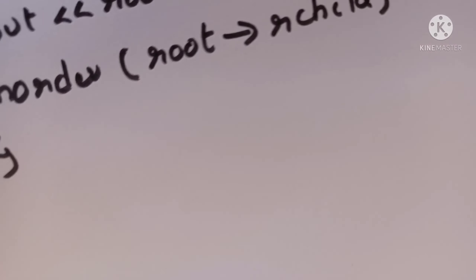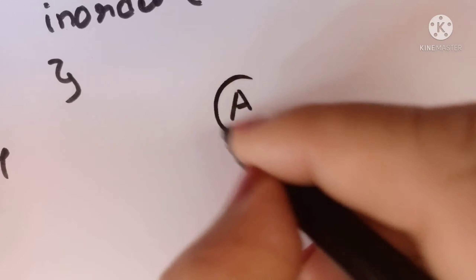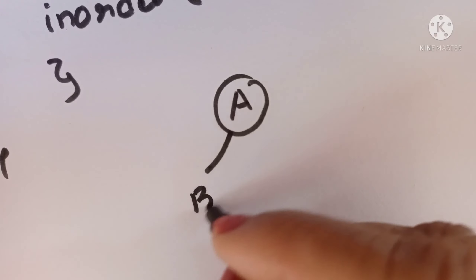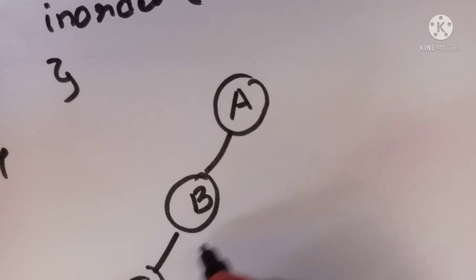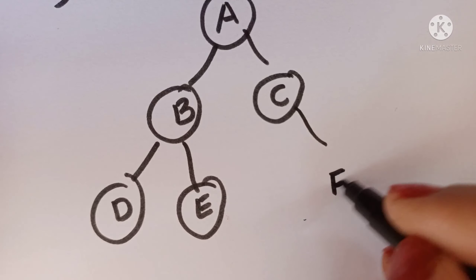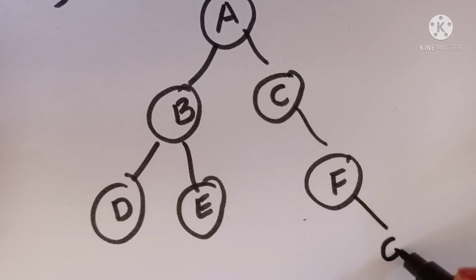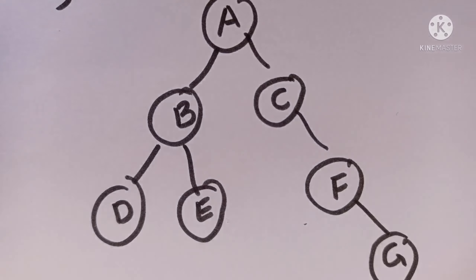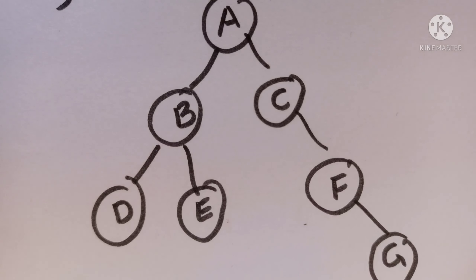A simple example tree with nodes A, B, D, E, C, F, and G is given — apply in-order and write the answer in the comment box. Thank you for watching. If you like this video, please like, share, and subscribe to my channel. Thank you.